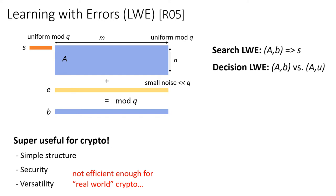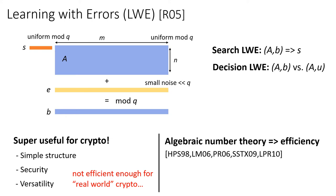However, in many cases, LWE is not efficient enough to be used in schemes designed for the real world. In order to improve efficiency, there are variants of LWE that rely on algebraic number theory and provide greater efficiency. In particular, the ring LWE problem is such a variant and is going to be the focus of this work. However, in order to make everybody's life easier, there's not going to be any algebraic number theory in the talk.